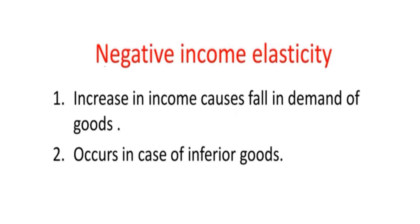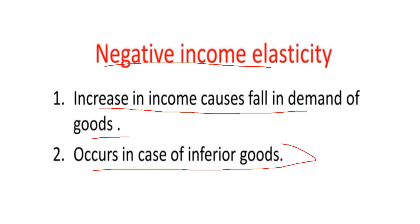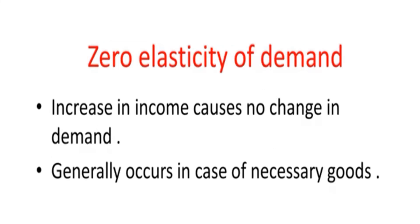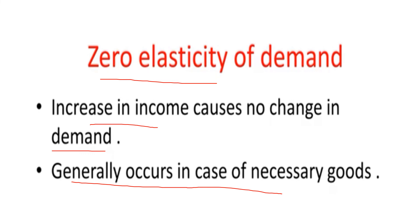The second is negative income elasticity: an increase in income causes a fall in demand for a good — this occurs only in the case of inferior goods. Zero income elasticity: an increase in income causes no change in demand — this generally occurs in the case of necessary goods, because we need that product regardless of income changes.